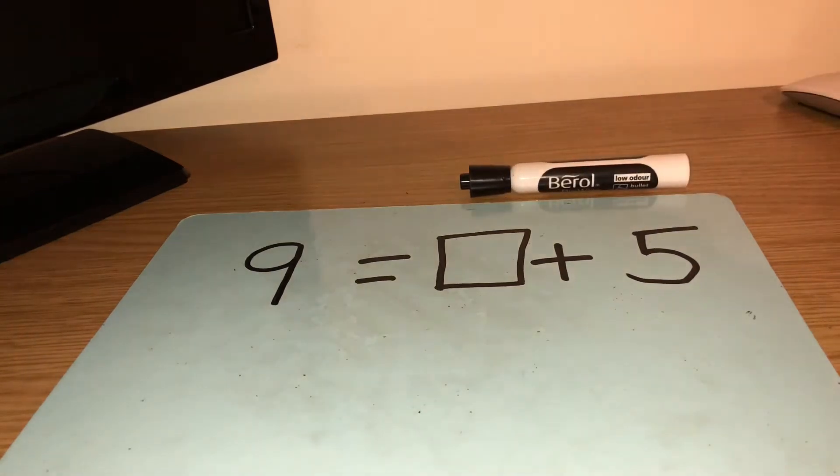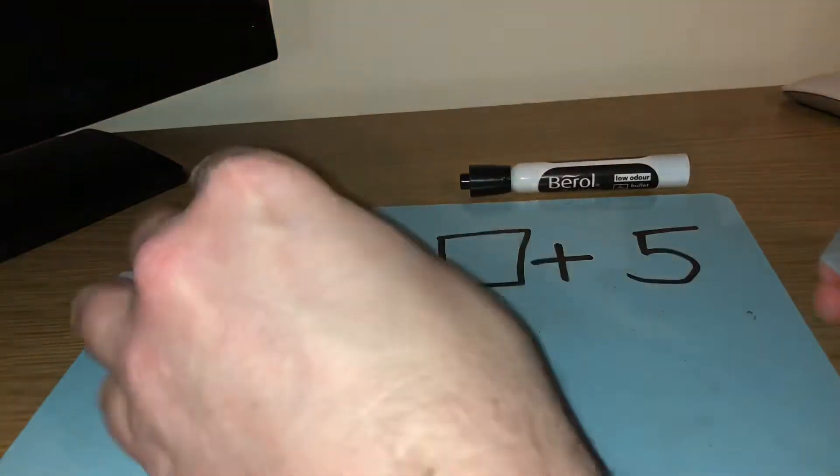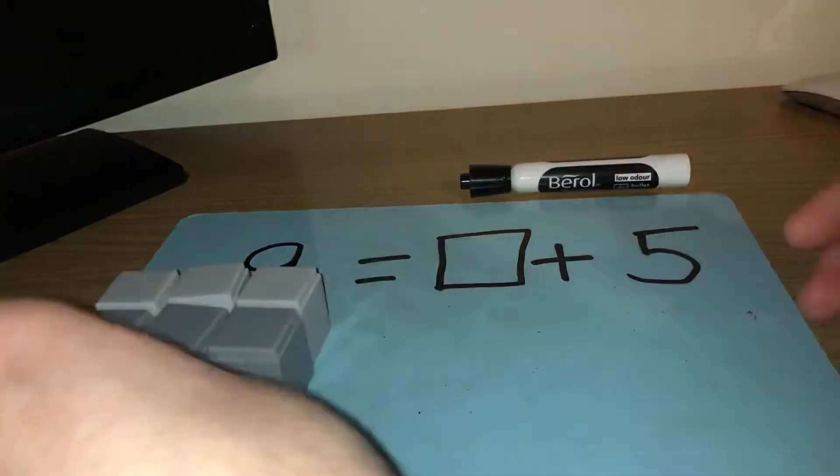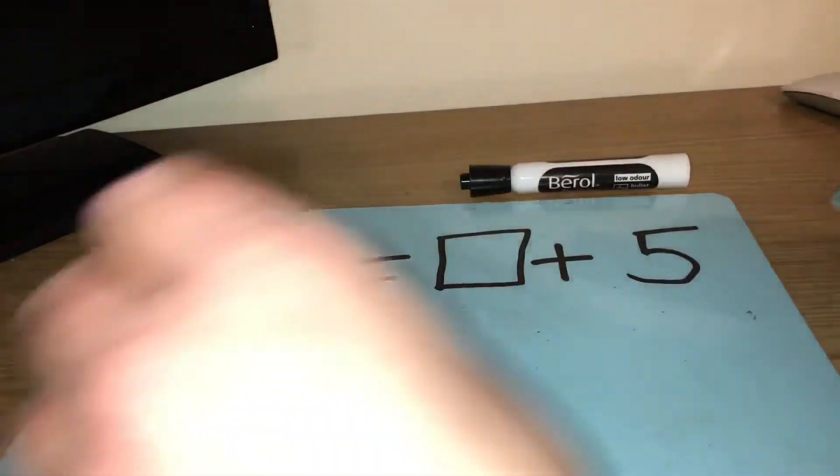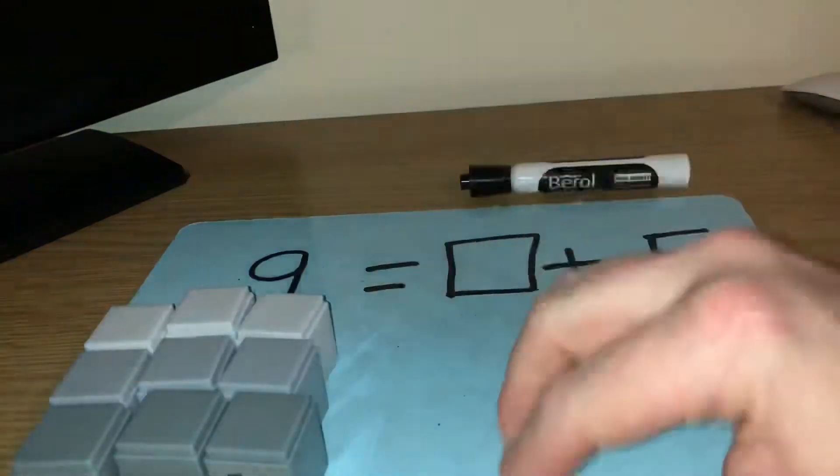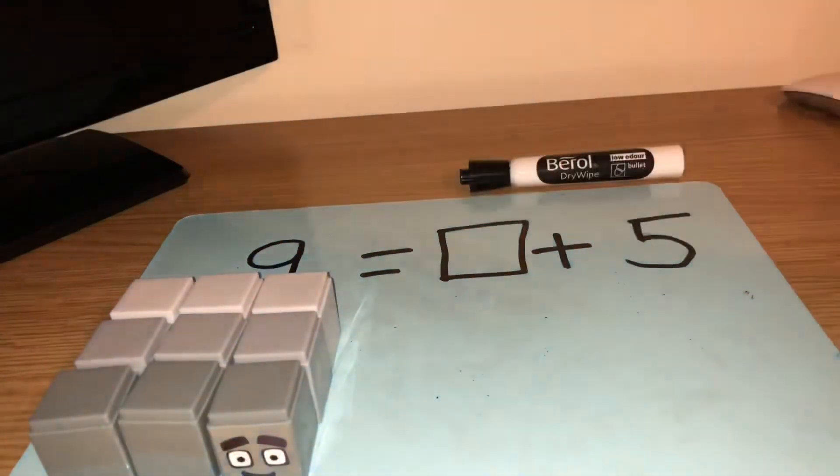So I'm going to use my number block number 9 to help me so you could use some objects. So if I know that number block number 9, so 1, 2, 3, 4, 5, 6, 7, 8, 9. Right, can you see I've got my 9 objects. So that's what 9 is and that's the whole part.